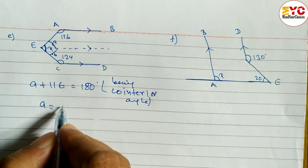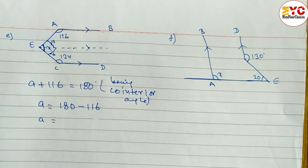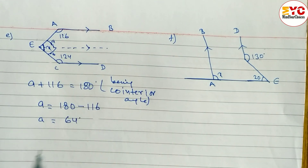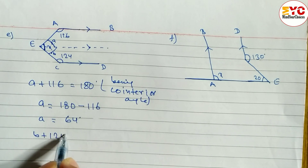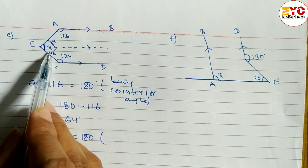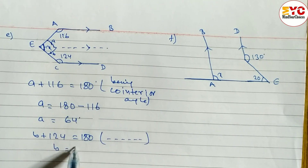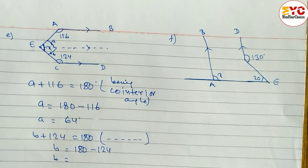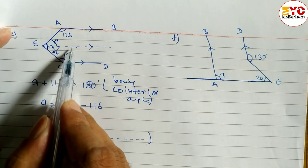Now find the value of A. A is equal to 180 minus 116, which gives us 64 degrees. Similarly, to find out the value of B: both angles are inside of the parallel lines, so B plus 124 is equal to 180 degrees. Reason: being co-interior angle. B is equal to 180 minus 124. When we subtract, we get B equal to 56 degrees.